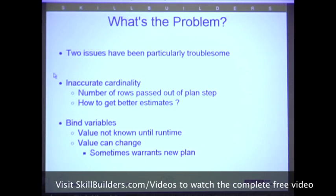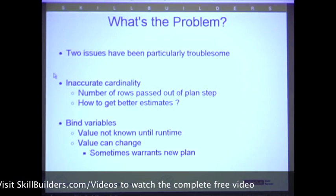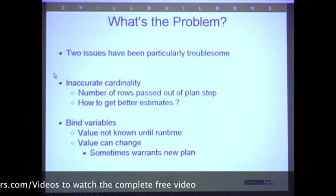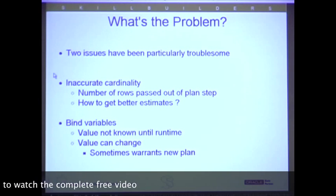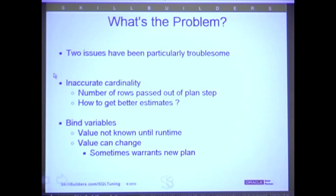So what's the problem? There are lots of problems, but the two main problems that this addresses are inaccurate cardinality — there are plenty of reasons for inaccurate cardinality. The number of rows passed out of a step in the plan: if it's right, things are typically pretty good. The next step in the plan is correct, whether the hash join or nested loop is based on that cardinality.